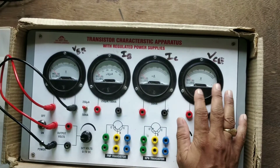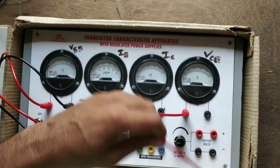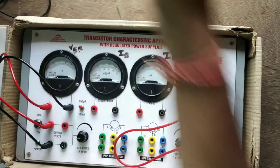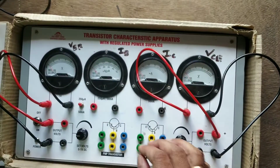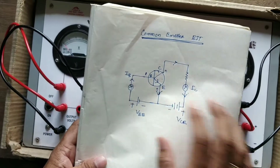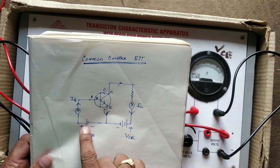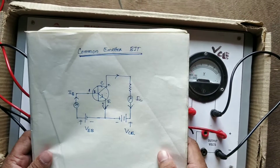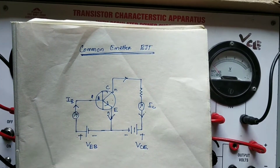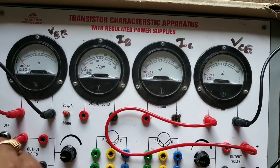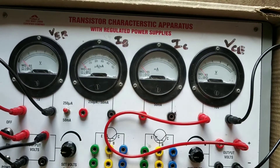Next, we also have to give power to the VCE voltmeter — positive to positive and negative to negative. Then, following the circuit diagram, VEB positive is connected to IEB — that is a red to red connection.